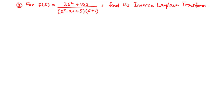With the third example, we are going to consider rational functions with quadratic factors. For this example, given f(s) equals (2s² + 10s) divided by (s² - 2s + 5)(s + 1), we are asked to find its inverse Laplace transform.